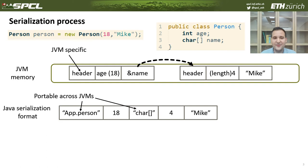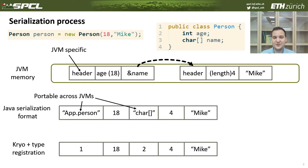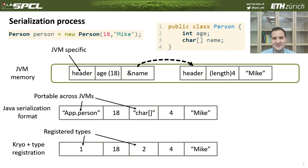In case of Java serialization format, it would include the name of the class. Kryo could also perform additional optimizations like type registration, replacing the names of the class with just a single integer. You may think that this is quite a simple operation — we just jump in memory, find all the objects we need to send, and perform some simple transformations. But actually such simple steps consume a lot of CPU cycles.